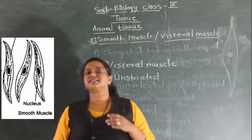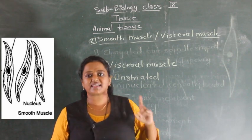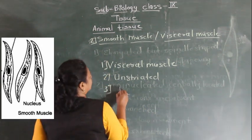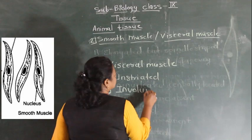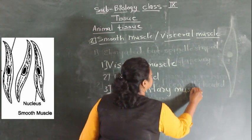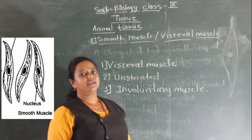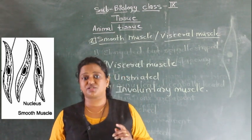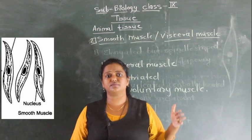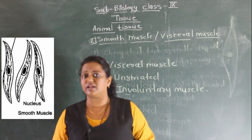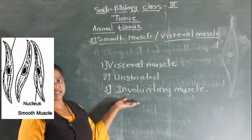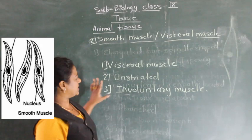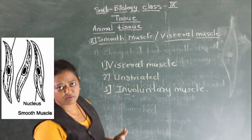Another name for smooth muscle is involuntary muscle, because their movement is not on our wish or will. Unlike skeletal muscles where movement depends on our wish, the movement of smooth muscle is not in our control — it is not working on our will. So smooth muscles are called involuntary muscles. The function of smooth muscle is peristalsis or peristaltic movement.